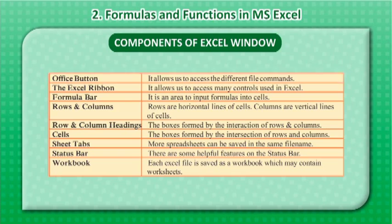Office Button: It allows us to access the different file commands. The Excel Ribbon: It allows us to access many controls used in Excel. Formula Bar: It is an area to input formulas into cells. Rows are horizontal lines of cells; columns are vertical lines of cells.